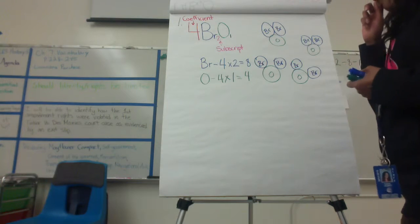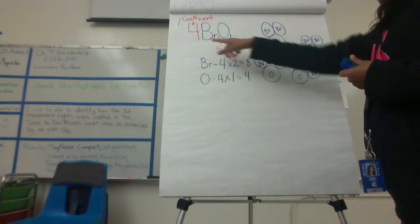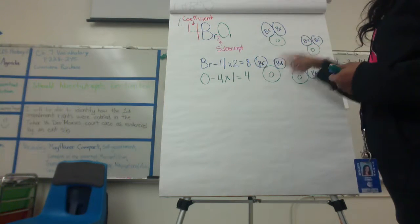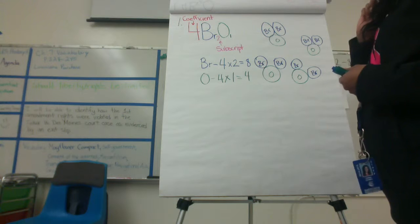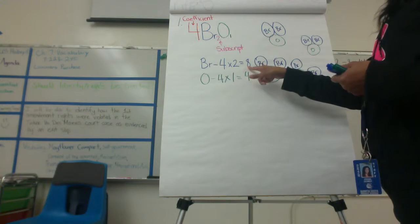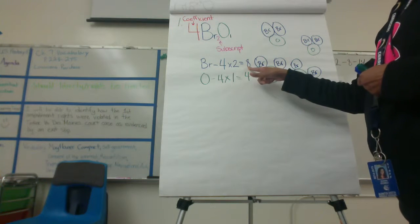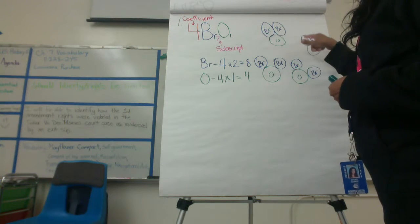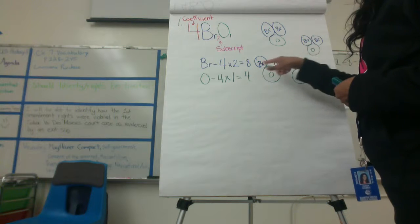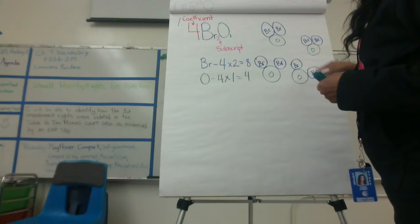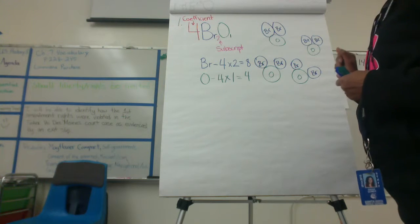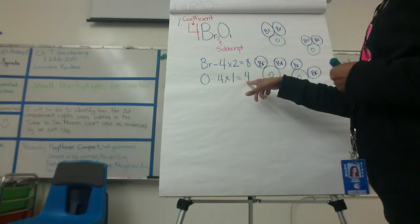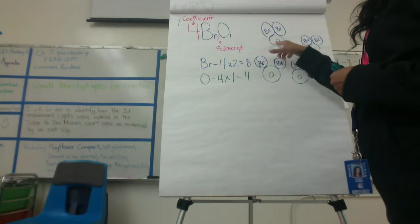According to the number, I count one, two, three, four compounds. Now I'm going to count to see if I actually have eight bromines: one, two, three, four, five, six, seven, eight. I do — so that is correct.